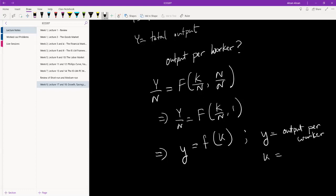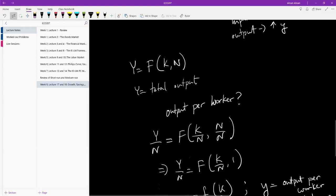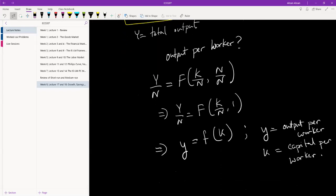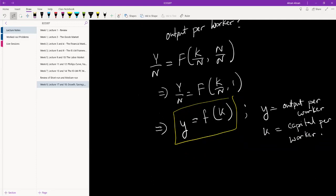Small k is our capital per worker. So you see the only difference is that at this level, this was the total output in the economy which was a function of total capital stock and total number of workers. And over here we've just converted that into the per worker, so output per worker is a function of capital per worker. I'll write that down because that's an important relationship.